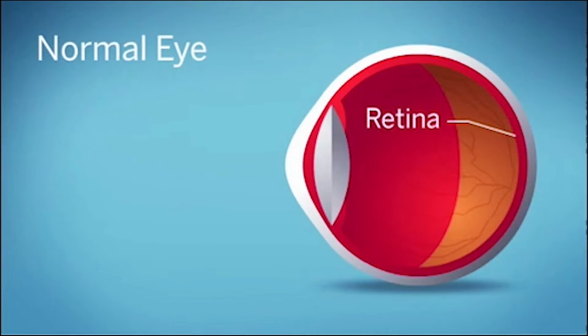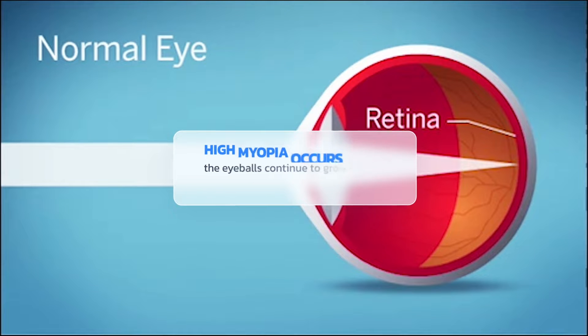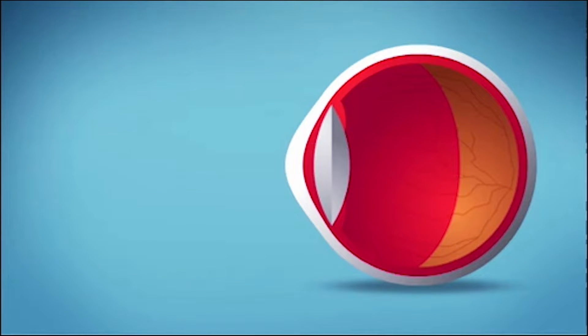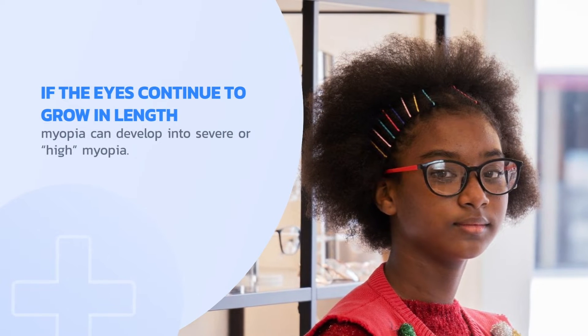A common type of childhood myopia is caused by the length of the eye being a little longer than it should be. As we grow into adulthood, our eyes grow as well. If the eyes continue to grow in length, myopia can develop into severe or high myopia.